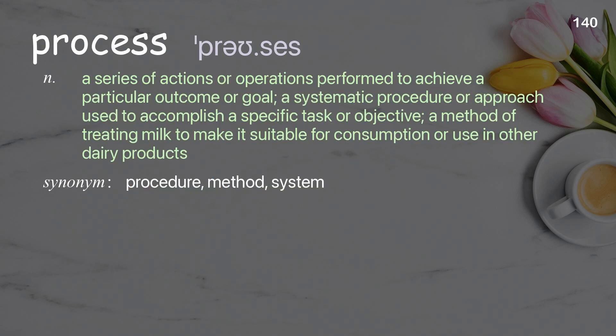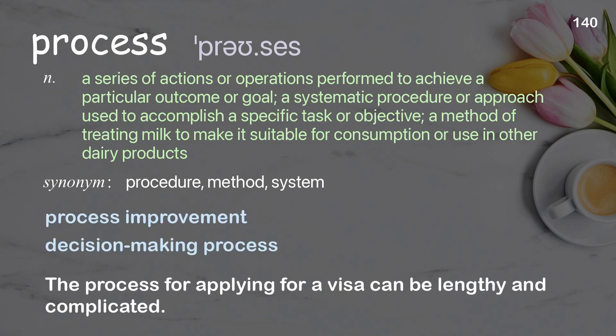Process: a series of actions or operations performed to achieve a particular outcome or goal; a systematic procedure or approach used to accomplish a specific task or objective. Examples: process improvement, decision-making process. The process for applying for a visa can be lengthy and complicated.